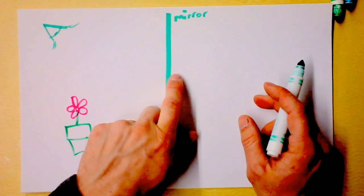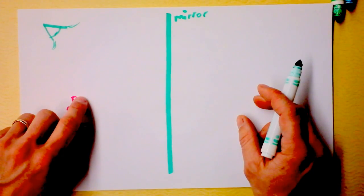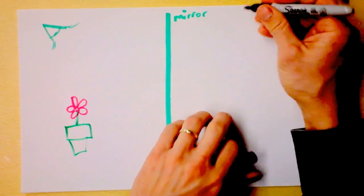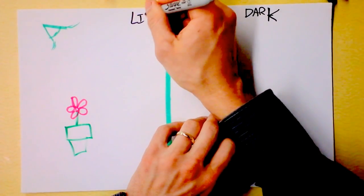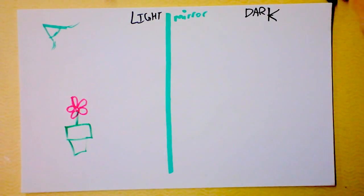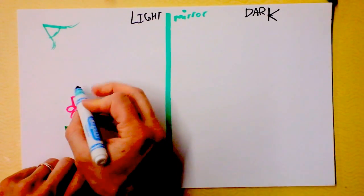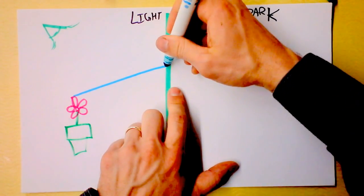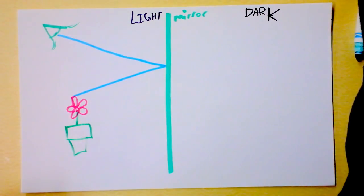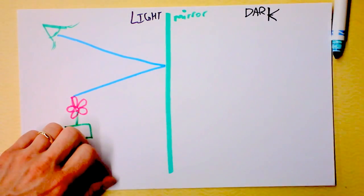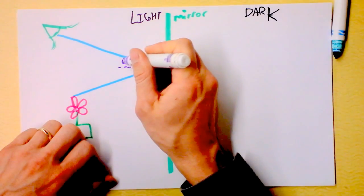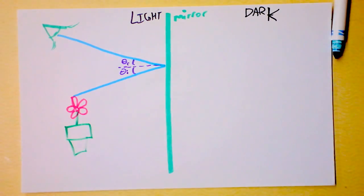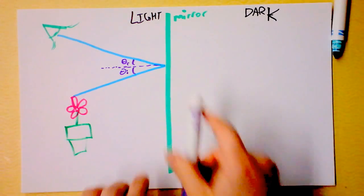The only way Newton could see a reflection of the flower in the mirror is if light came from the flower and hit his retina. If this mirror extends throughout all of space, it's actually going to be dark on the other side. From the top of the flower, there's light coming off the flower, hitting the mirror, and bouncing out to the eye. The law of reflection says the incoming angle equals the reflected angle, both measured from the normal to the reflecting surface.